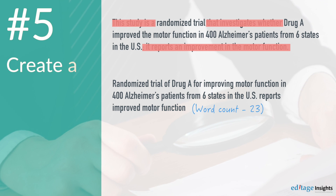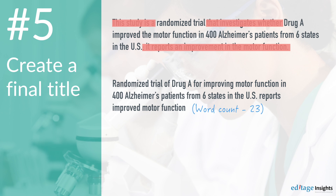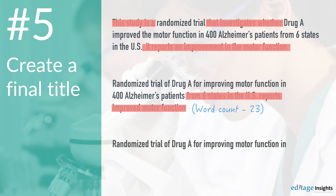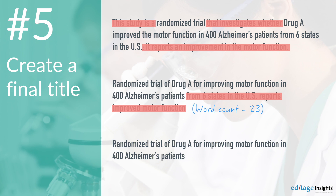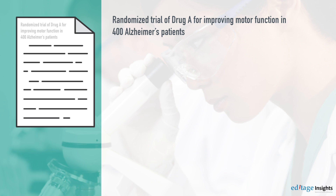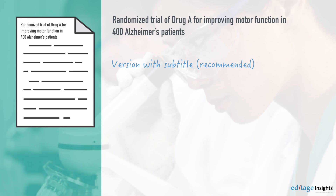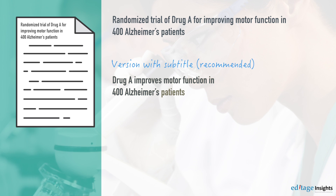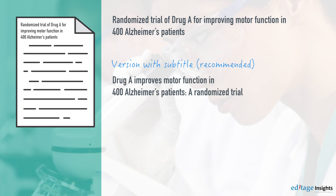Step 5. Create a final title. Start polishing. Delete information that is not essential. Randomized trial of Drug A for improving motor function in 400 Alzheimer's patients. There, you have a title for your research paper. You could also add a subtitle to this version: Drug A improves motor function in 400 Alzheimer's patients. A randomized trial.